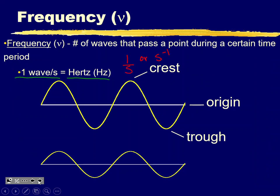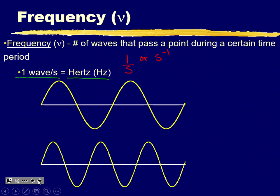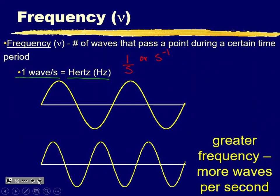Looking at this diagram, the bottom wave has higher frequency because there are more oscillations in the same given amount of time. That also makes the wavelength narrower — the wavelength shrank. So we see an indirect or inverse relationship between frequency and wavelength: as you increase frequency, wavelength gets shorter.